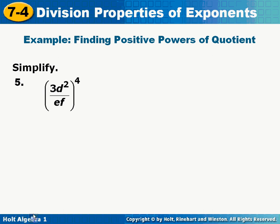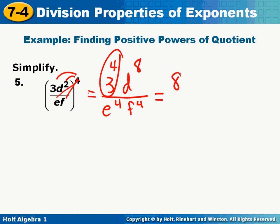Number 5. Now we have some letters in there. I have to do the 4th power to everything, everything on the top and everything on the bottom. So I'm going to do 3 to the 4th, D to the 8th, over E to the 4th, and F to the 4th. Now the only thing I'm going to simplify is this 3 to the 4th, because the D, the E, and the F cannot be canceled because they're not any of the same letters. So my final answer is 3 times 3 times 3 times 3, which is 81 D to the 8th, over E to the 4th, F to the 4th.